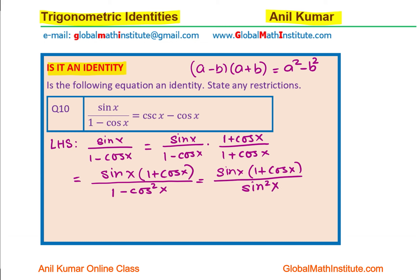We can cancel one of the sin x factors, and what do we get? We get 1 plus cos x in the numerator divided by sin x. That gives us 1 over sin x plus cos x over sin x.